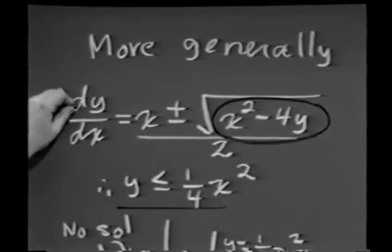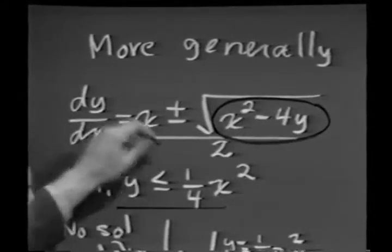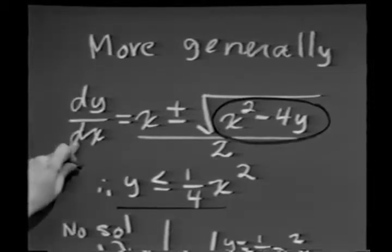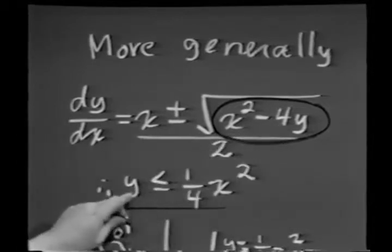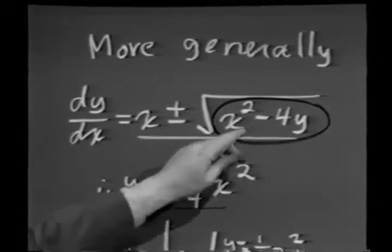without even knowing what the solution was, that dy dx isn't even a real number. Remember, dy dx geometrically is slope, and slope is real. So this wouldn't even be a real number if y was greater than 1 fourth x squared.